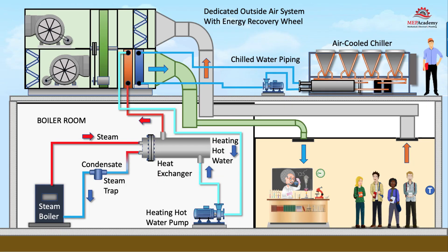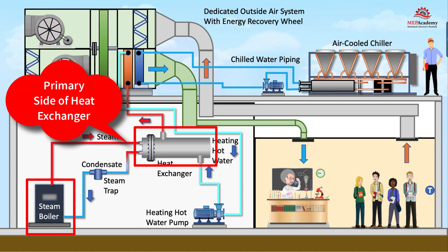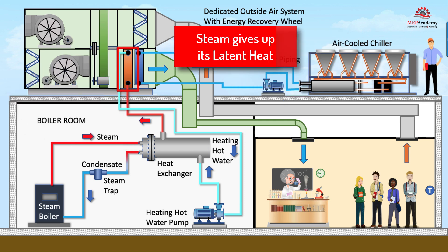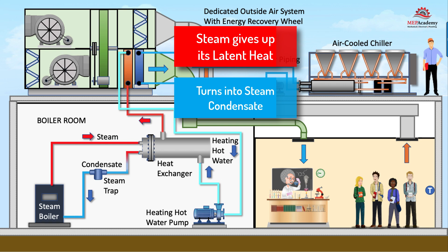Here we use a steam boiler to feed the primary side of a heat exchanger. The steam will transfer heat to the secondary loop, which is feeding the heating hot water coils and air handlers. The steam gives up its latent heat and condenses as the heat is transferred to the secondary side of the heat exchanger.